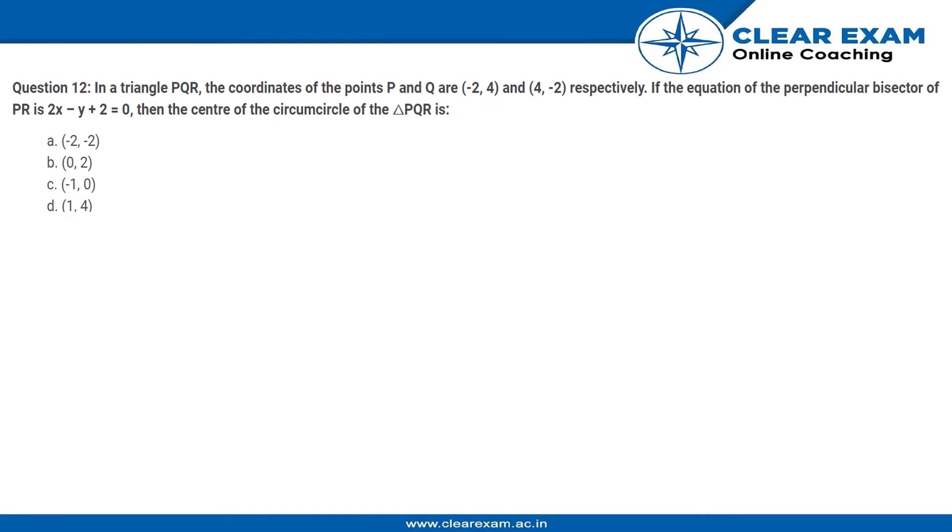Hello students, here is the question. In a triangle PQR, the coordinates of the points P and Q are (-2, 4) and (4, -2) respectively.